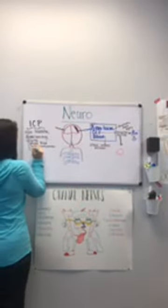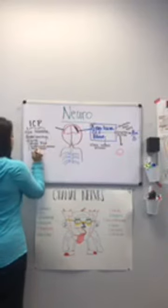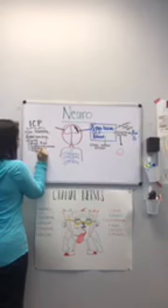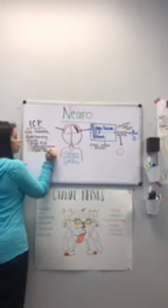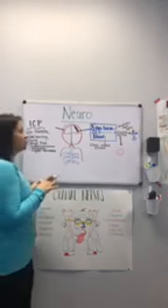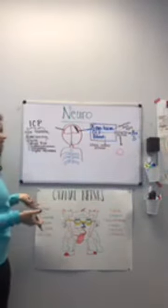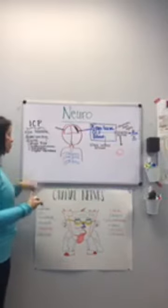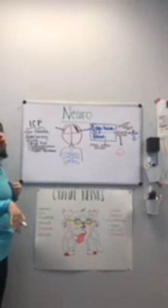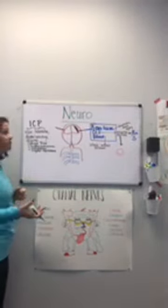The second component of Cushing's triad is bradycardia. The third is irregular respirations — usually seen as Kussmaul's respirations. What's happening is the body shifts from aerobic to anaerobic metabolism to get enough perfusion. The byproduct is lactic acid, which builds up in the body, and you get these irregular respirations to blow off the acid. So these are the signs and symptoms you'll see with increased ICP.